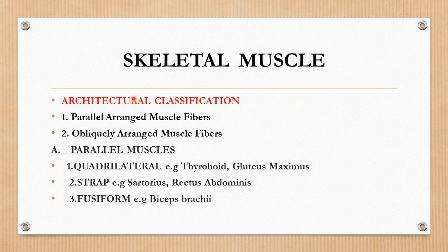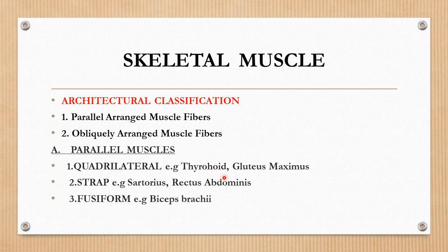The very important and basic classification of skeletal muscle is the architectural classification, based on the morphology and shape of the muscles. The muscles are arranged either in a parallel manner — known as parallel arranged muscle fibers — or obliquely, known as obliquely arranged muscle fibers. Parallel muscles have further subtypes: quadrilateral or quadrate shape muscles, with examples being the thyrohyoid and gluteus maximus.